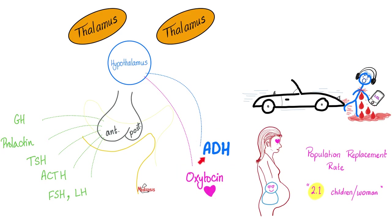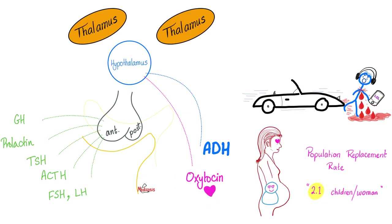ADH and oxytocin are released under hypothalamic influence, which is closer to the diencephalon — the area in your brain related to memory, like the limbic system. Oxytocin helps you forget; ADH helps you remember. Oxytocin is involved in childbirth. If each lady remembered the pain of childbirth, she would never get pregnant again and humanity would go extinct. But thanks to oxytocin, she forgets and gets pregnant again to maintain the population replacement rate at 2.1 or more.